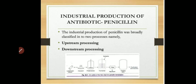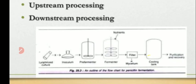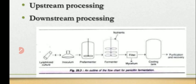The industrial production of penicillin is broadly classified into two processes: one is upstream processing and the second is downstream processing. Looking at the diagrammatic representation, the outline chart of penicillin fermentation includes several simple steps.